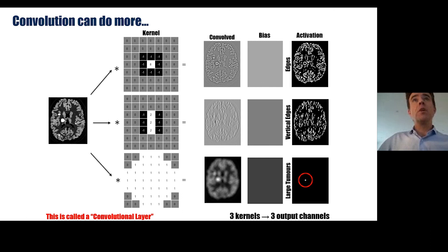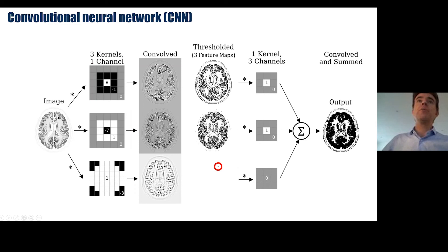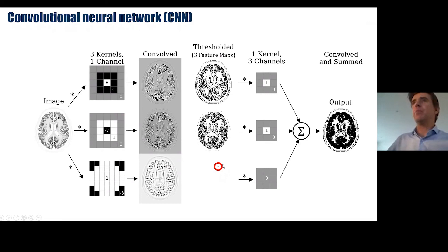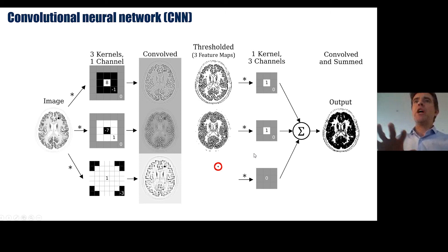Here's an extension showing two layers: we take a brain image, convolve with three different kernels — in practice learned from data — to get convolved outputs which can be thresholded. We can then convolve those and sum them all together to get some output. In this trivial case it shows how you could locate a tumor and then, if desired, remove that feature — keeping other features in the output. So here we have a two-layer convolutional network, and we can define whatever output we desire based on whatever input data we have — just like that earlier convolution example for denoising and de-blurring.